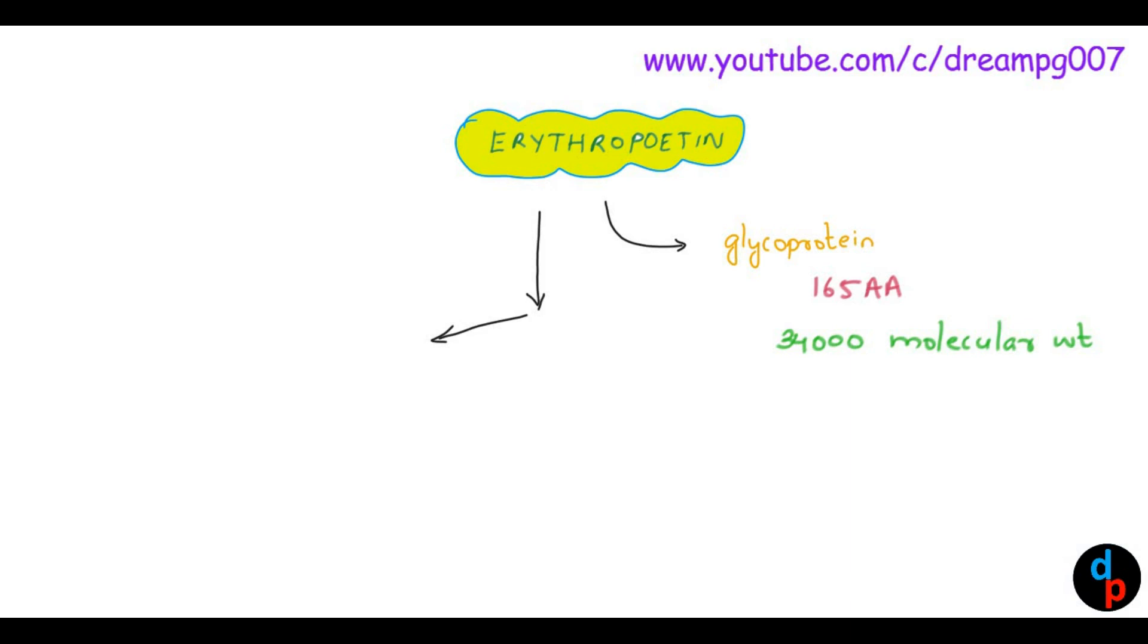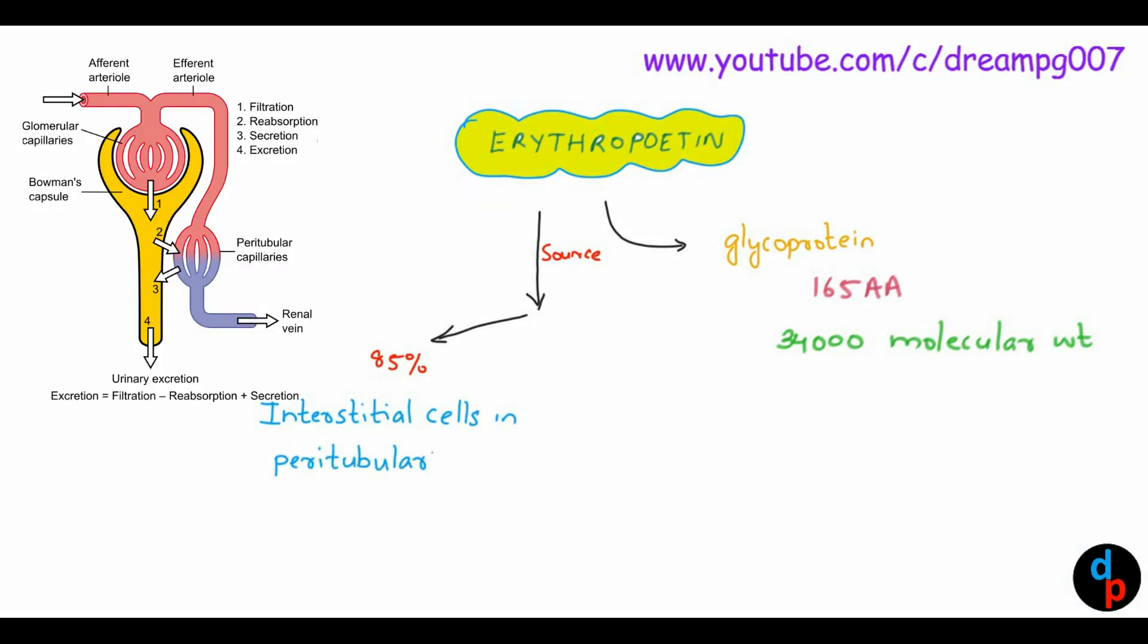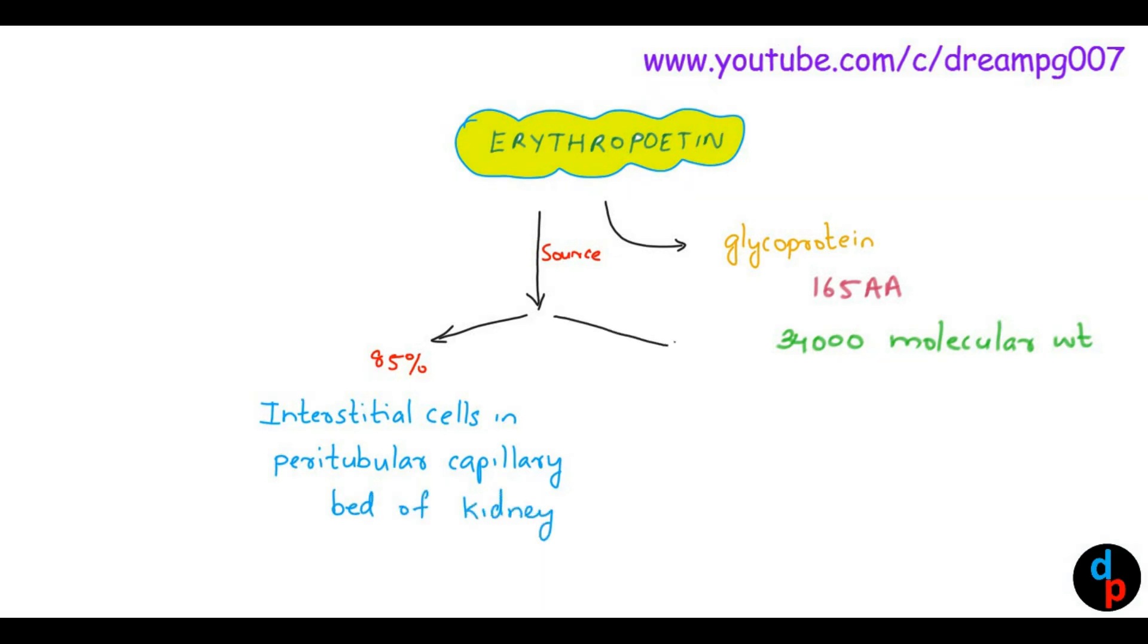The major source of erythropoietin is the kidney. About 85% of erythropoietin is synthesized from interstitial cells in the peritubular capillaries of the kidney. The rest is synthesized from perivenous hepatocytes of the liver. All erythropoietin is metabolized and inactivated by the liver.